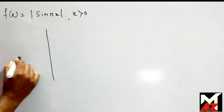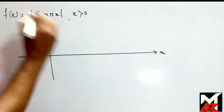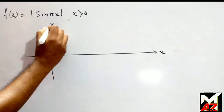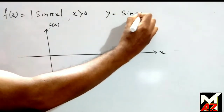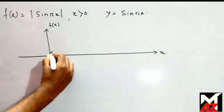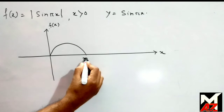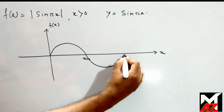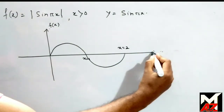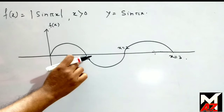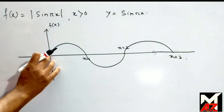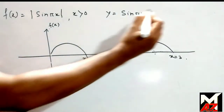Here, the function is f(x) = |sin(πx)|, x > 0. If we draw a graph of this function, this is the x-axis, this is the y-axis or f(x)-axis. We know that the curve of y = sin(πx) has zeros at x = 1, x = 2, x = 3, because sin(π) = 0, sin(2π) = 0, sin(3π) = 0. The curve does not include x = 0 because we have x > 0.